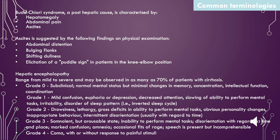Budd-Chiari syndrome, a post-hepatic cause, is characterized by hepatomegaly, abdominal pain, and ascites. Ascites is suggested by the following findings on physical examination: abdominal distension, bulging flanks, shifting dullness, and elicitation of a puddle sign in patients in the knee-elbow position.